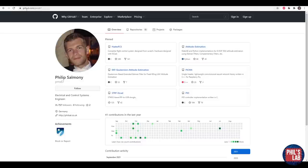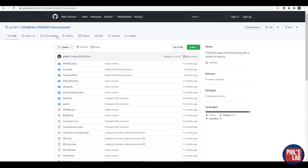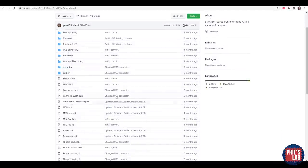If you'd like to find the LittleBrain board design files as well as the source code I'm using in these videos, you can go to my GitHub repository at github.com/pms67, navigate to the LittleBrain STM32F4 sensor board directory, and you can find all the firmware, libraries, schematics, and KiCad design files.